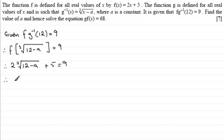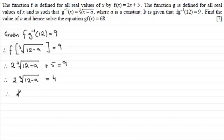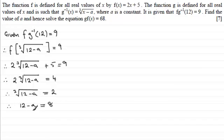Subtracting 5 from both sides gives 2 times the cube root of (12 minus a) equals 4. Dividing both sides by 2 gives the cube root of (12 minus a) equals 2. Cubing both sides gives 12 minus a equals 8. Rearranging — adding a to both sides and subtracting 8 — gives a equals 4.